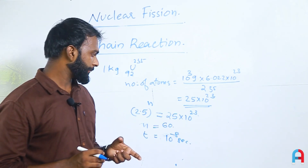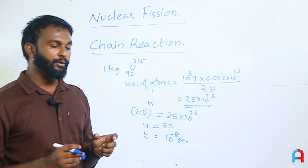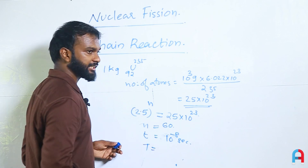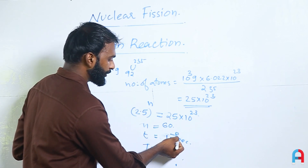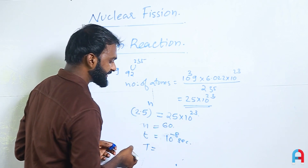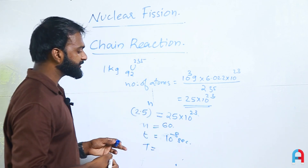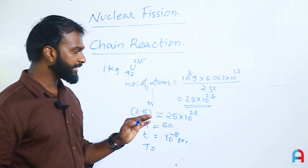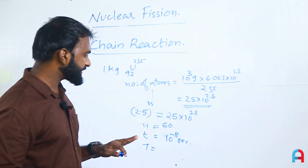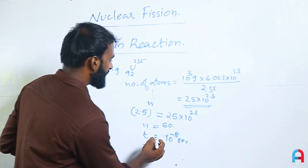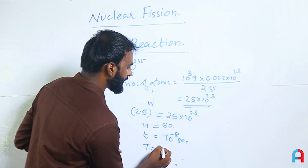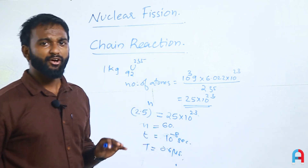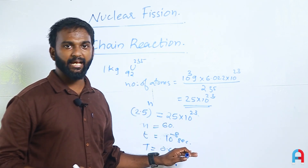After 60 stages, with each stage taking 10^-8 seconds, the total time is 60×10^-8 seconds, which equals 0.6 microseconds. So the complete fission of 1 kg of uranium can be completed in just 0.6 microseconds.